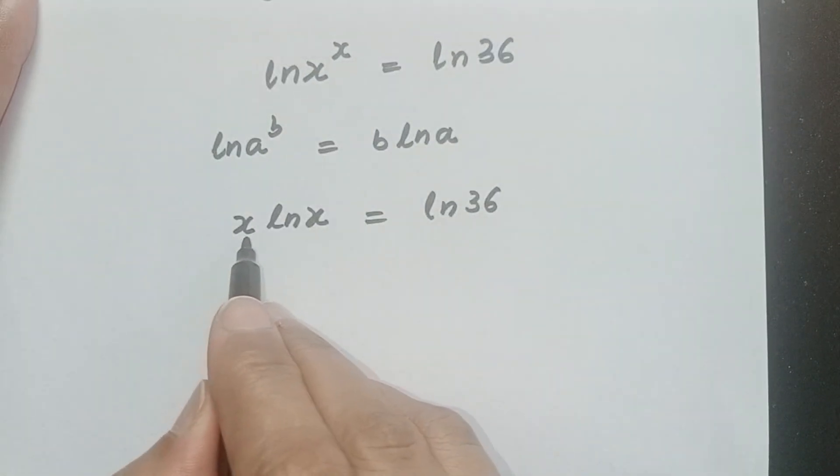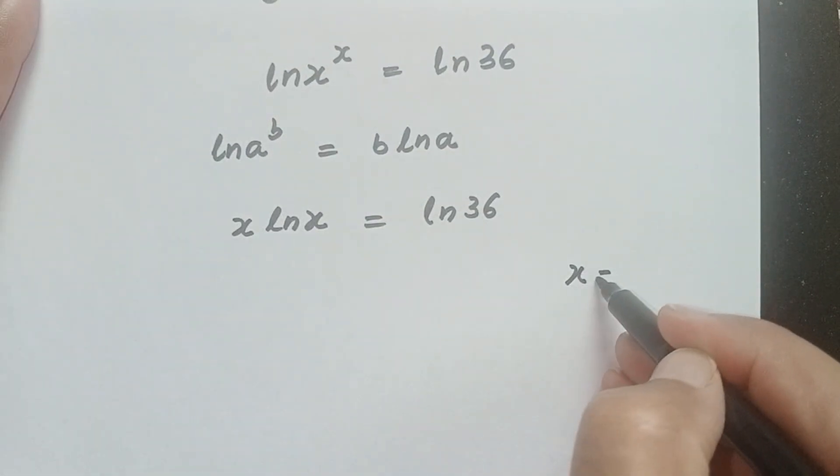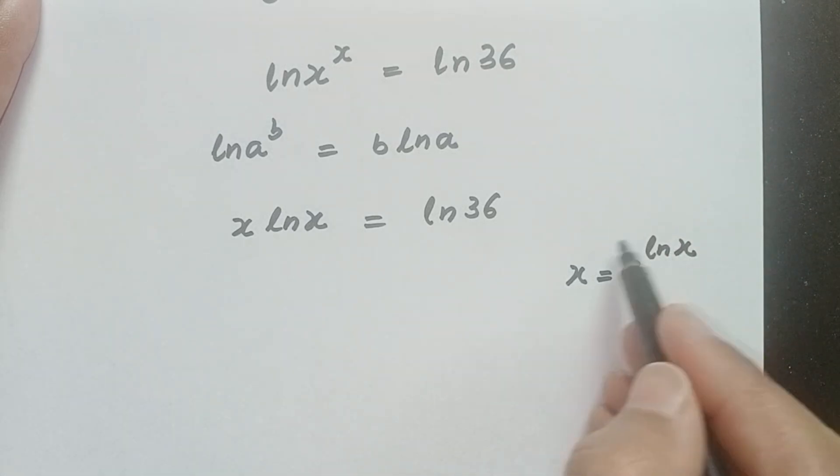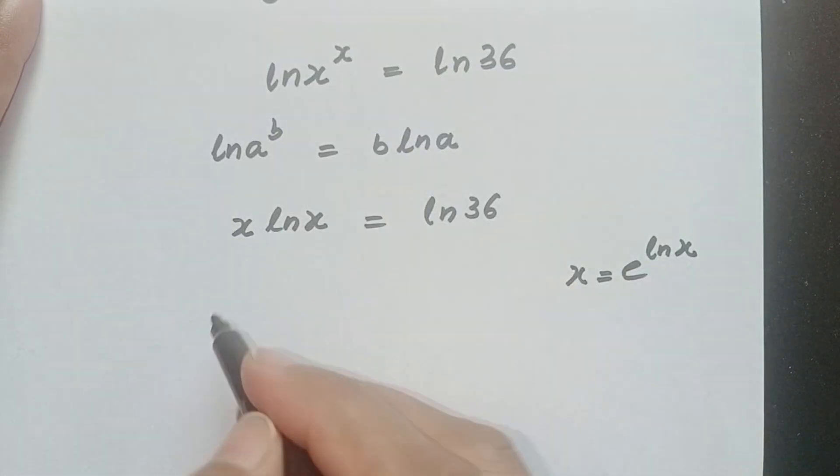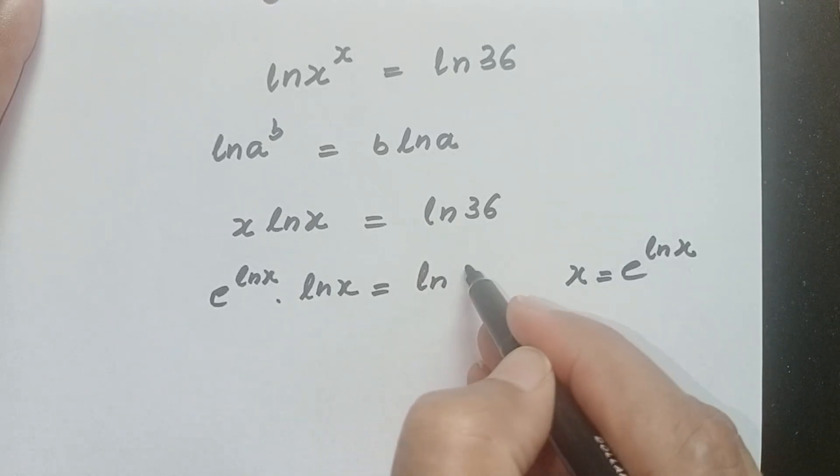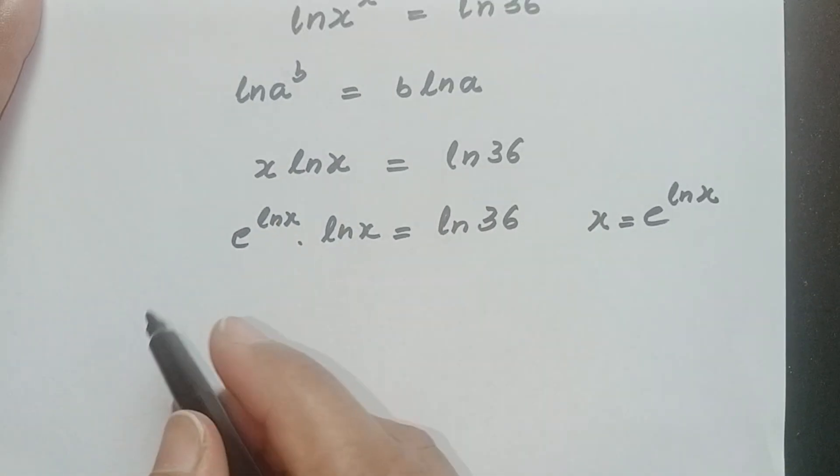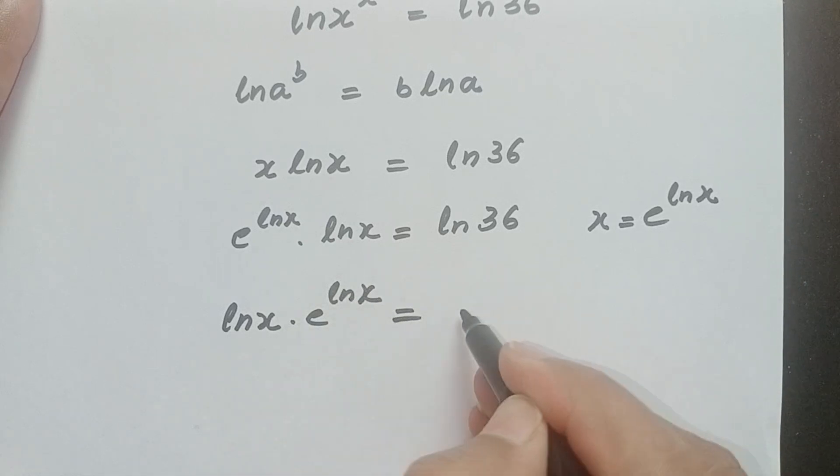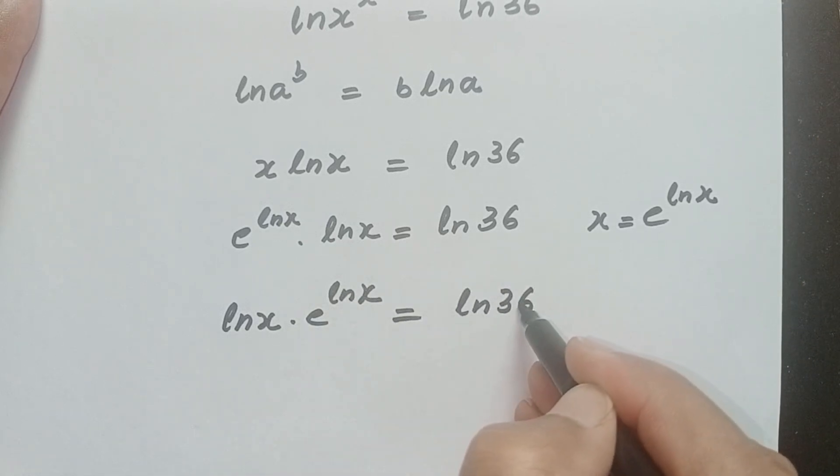Now this x, we can write the value of x as e power ln x. Now we will insert this value of x here and we will write e power ln x times ln x is equal to ln 36. We will arrange this side, we can write ln x times e power ln x is equal to ln 36.